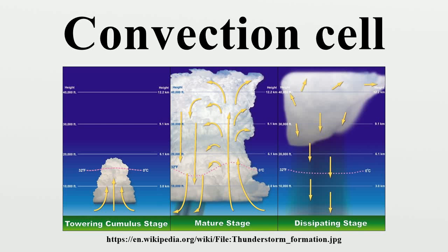In the field of fluid dynamics, a convection cell is the phenomenon that occurs when density differences exist within a body of liquid or gas. These density differences result in rising and/or falling currents, which are the key characteristics of a convection cell. When a volume of fluid is heated, it expands and becomes less dense and thus more buoyant than the surrounding fluid. The colder, denser part of the fluid descends to settle below the warmer, less dense fluid, and this causes the warmer fluid to rise. Such movement is called convection, and the moving body of liquid is referred to as a convection cell.